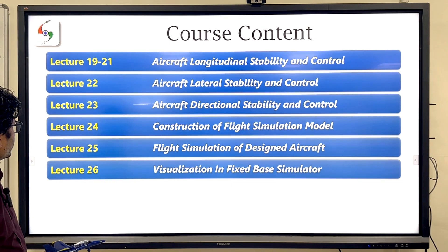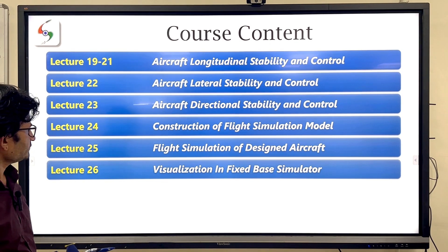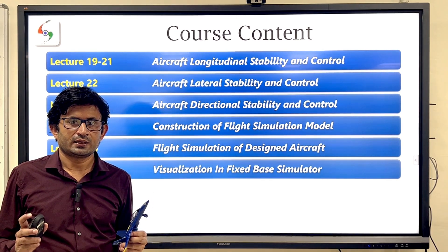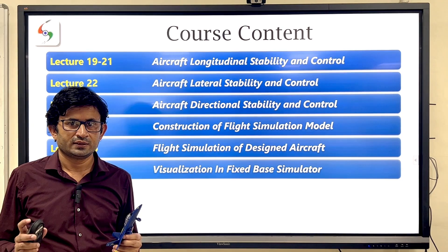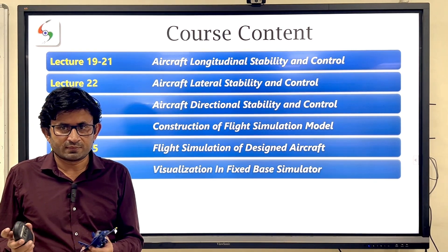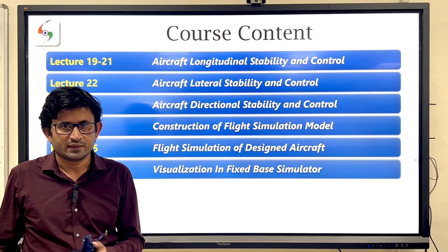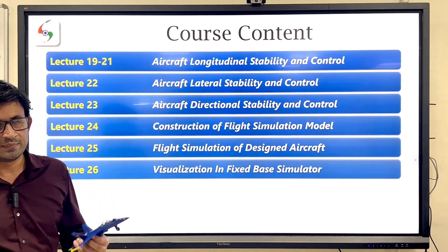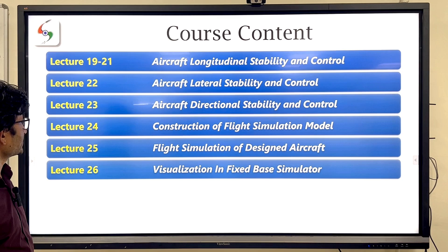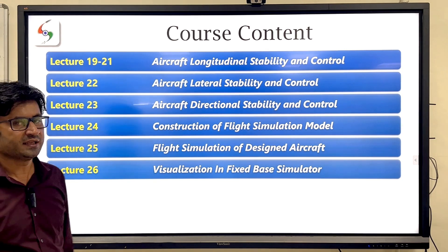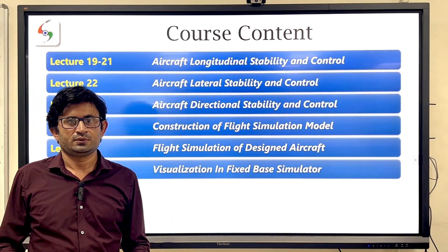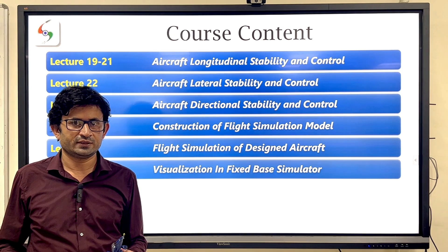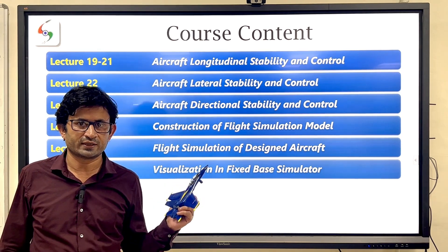From lecture 1 to 23 we have covered all the theoretical aspects — starting from the history of manned and unmanned aircraft through to weight estimation, sizing, performance, and stability. Now we will consider two examples and build simulation models, including a propulsion model, an aerodynamic model, and a database, based on what we have derived in the earlier lectures.